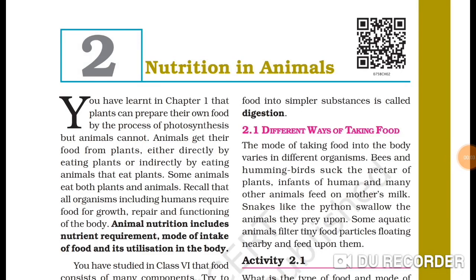Lesson 2: Nutrition in Animals. You have learned in Chapter 1 that plants can prepare their own food by the process of photosynthesis, but animals cannot. Animals get their food from plants either directly by eating plants or indirectly by eating animals that eat plants. Some animals eat both plants and animals. All organisms including humans require food for growth, repair, and functioning of the body. Plants can make their own food, which is why plants are called autotrophs.